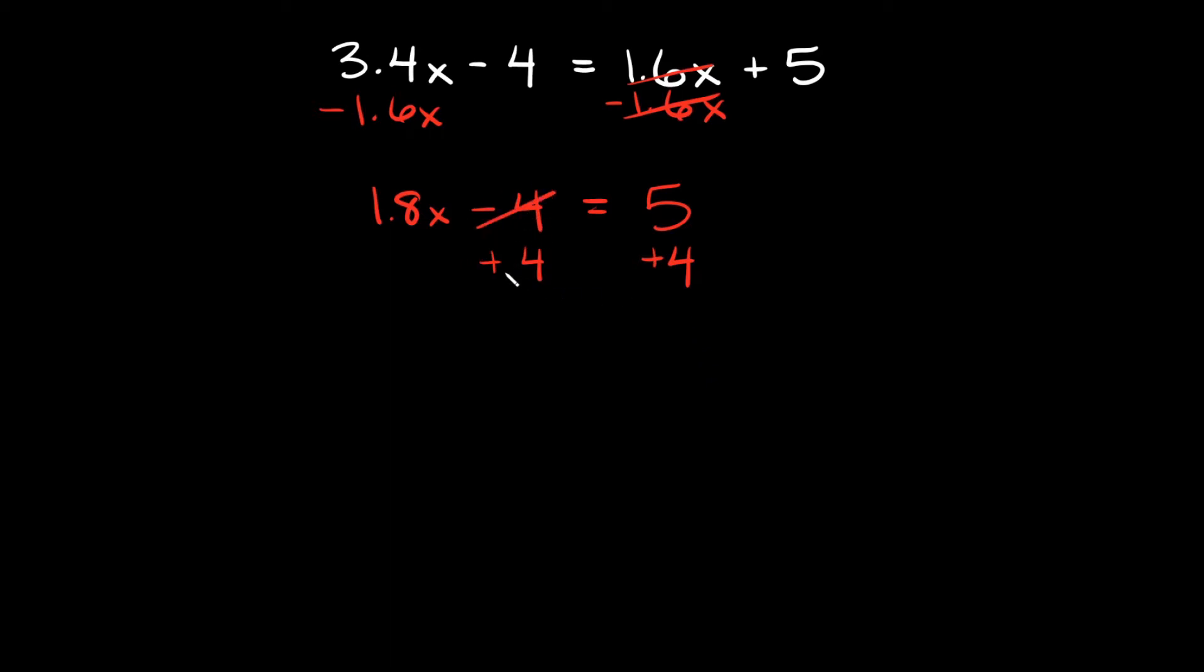So then these 4's just go to 0, they cancel out. On this side of the equal sign we're just left with this 1.8x, and then that's equal to 5 plus 4 which is 9.